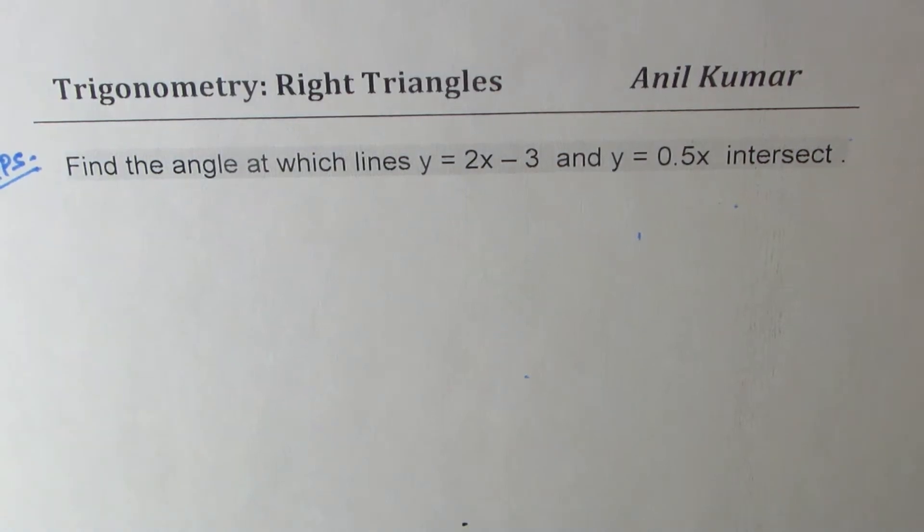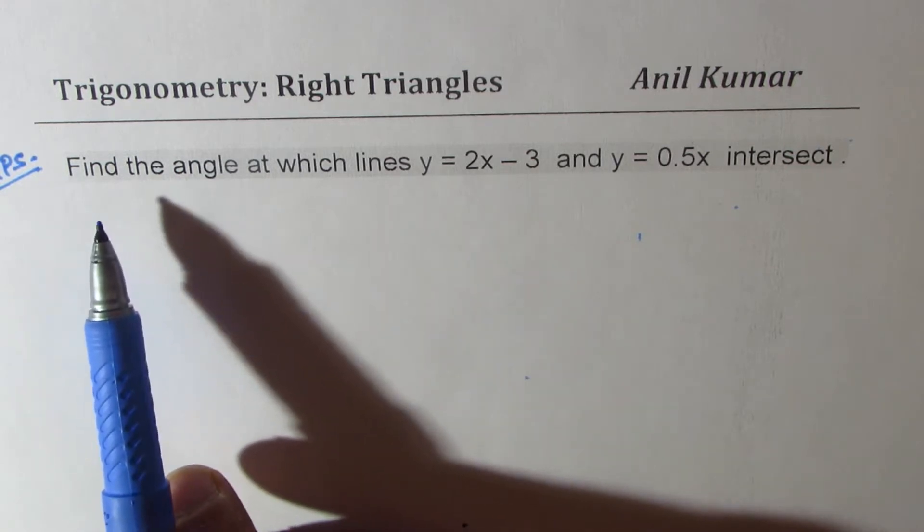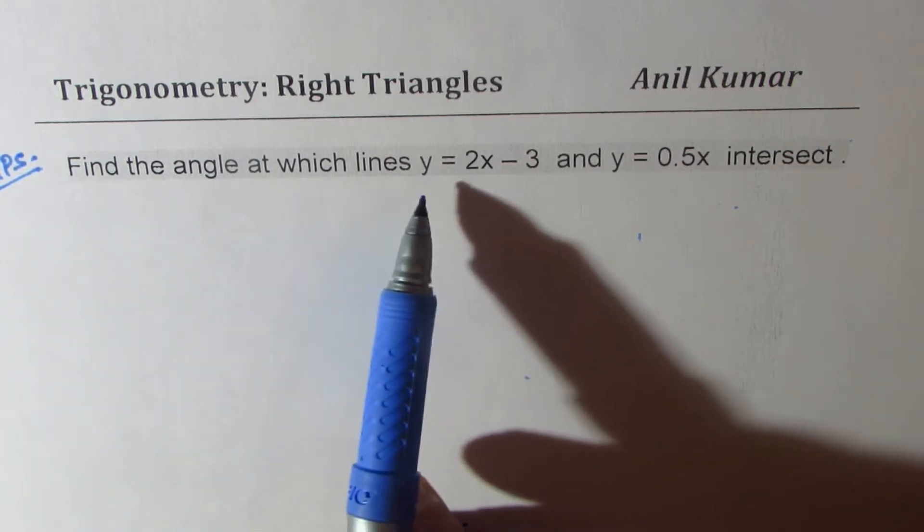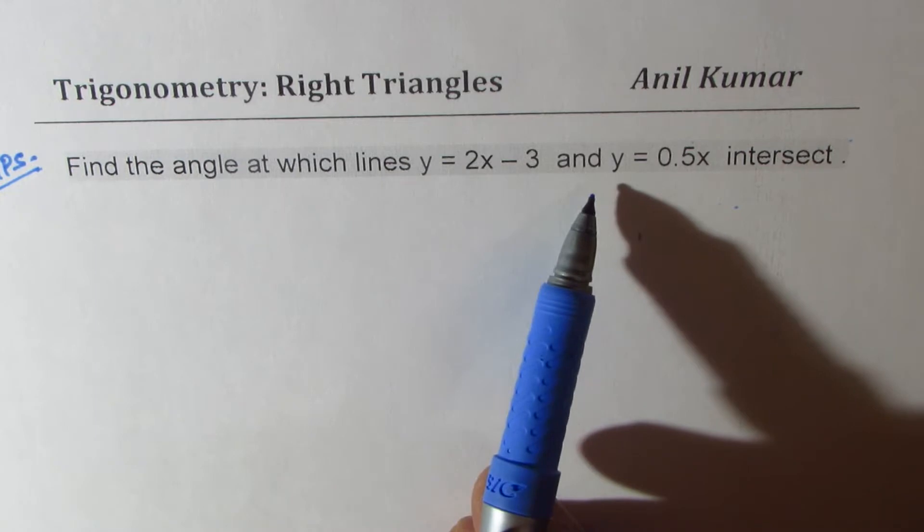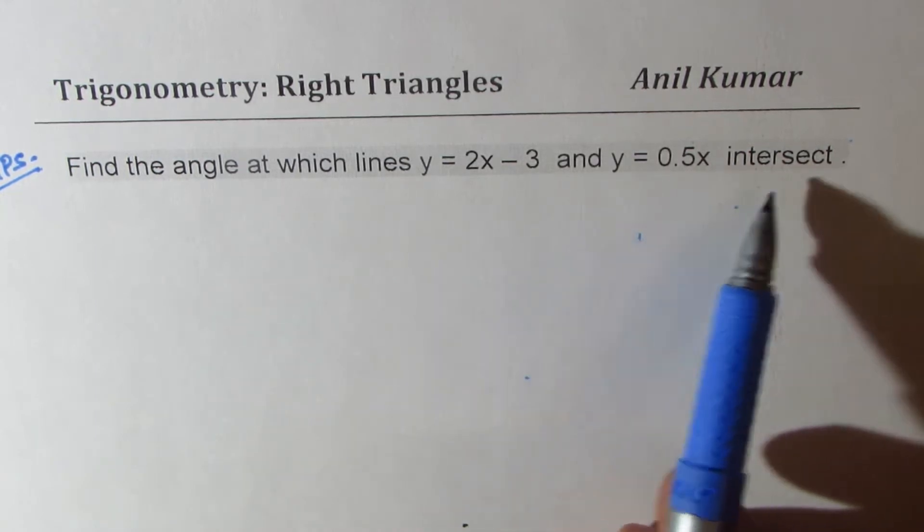I'm Anil Kumar, sharing with you a very interesting example to find the angle between intersecting lines at the point of intersection. So the question here is: find the angle at which lines y equals 2x minus 3 and y equals 0.5x intersect.